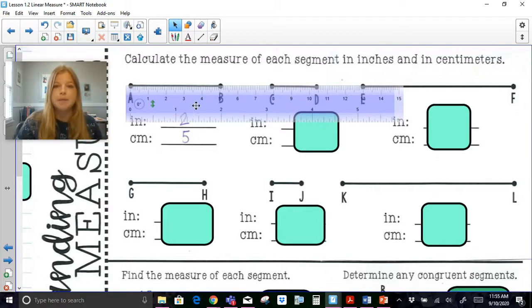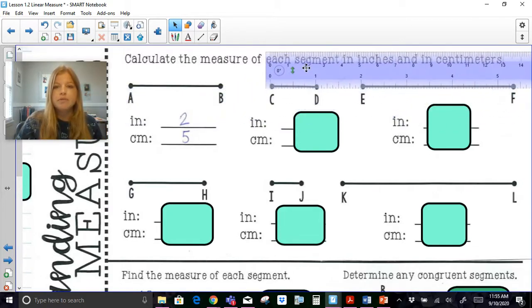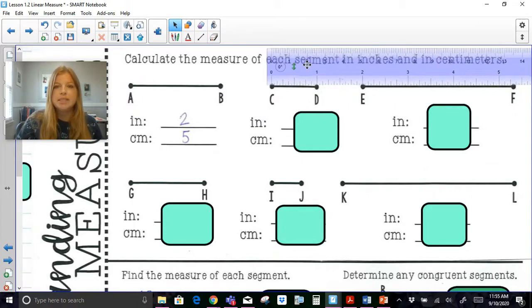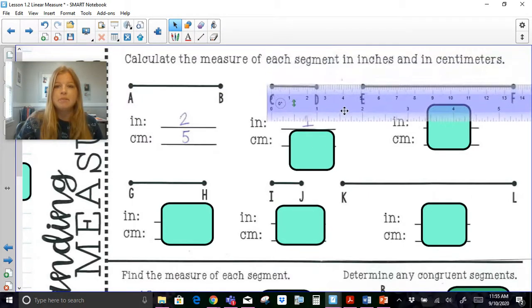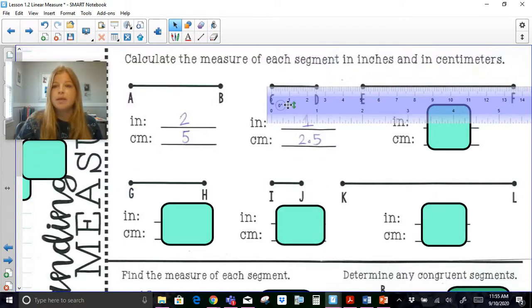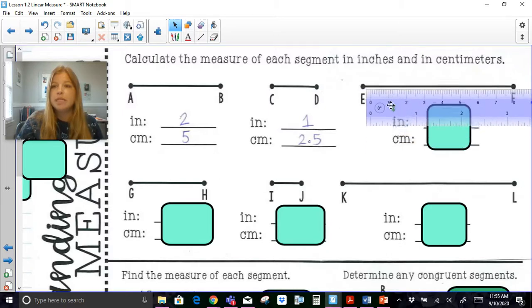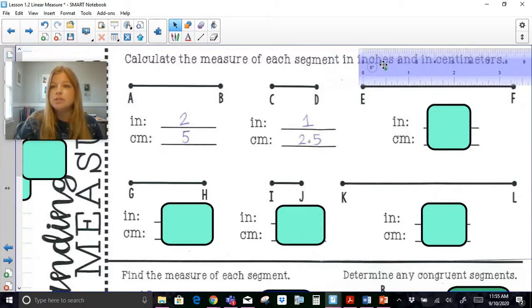Something we should know is that each inch converts to 2.54 centimeters so five centimeters for two inches is pretty accurate. For the next one if I wanted to calculate CD in inches I see it's exactly one inch and then if I wanted to measure CD in centimeters it looks like it's two and a half centimeters.